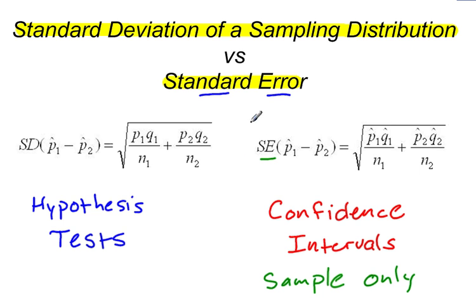And again, this could apply to other types of inference as well. I'm just using the difference between proportions as my example. And for hypothesis tests, we assume that the null hypothesis is true.